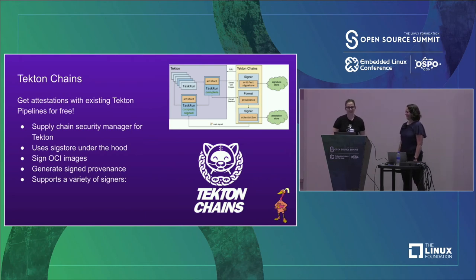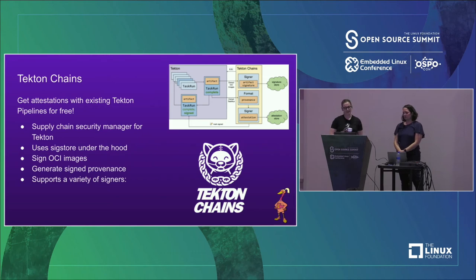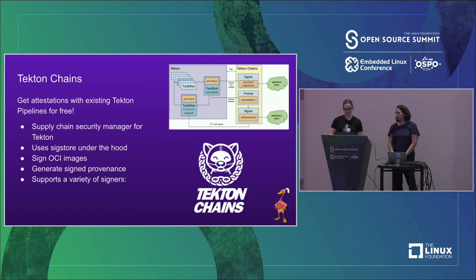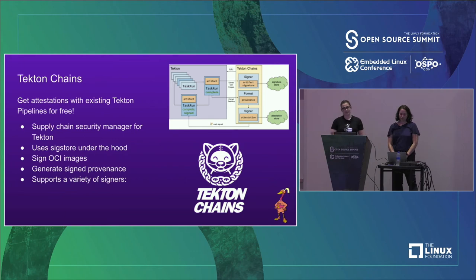Another project very dear to my heart is Tekton Chains. Tekton is built by extending Kubernetes and runs pipelines and tasks inside a Kubernetes cluster. One of the benefits of using Kubernetes is that it's so extensible. Tekton Chains is an optional controller that you can add to an existing Tekton cluster, and it observes the execution of tasks and pipelines. If it sees an image being built, it can generate provenance and sign those images for you. Eventually it'll be able to recognize and do this for all kinds of artifacts, which means you'd be able to write your tasks and pipelines without having to add any explicit supply chain security support, and Tekton Chains would just add it for you.